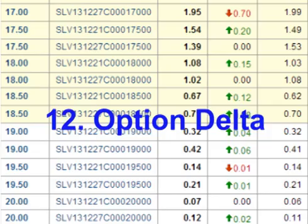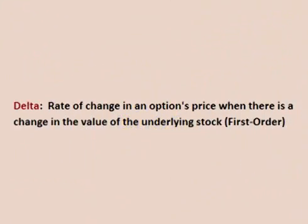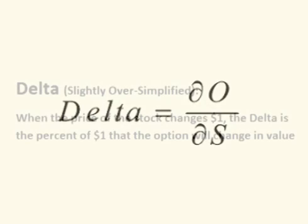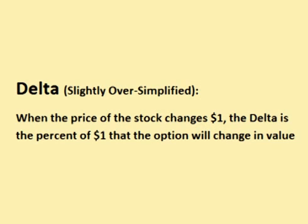Hello and welcome. In this video, we will take a closer look at Delta. In the last video, I mentioned that the Delta is the rate of change in an option's value when there is a change in the price of the underlying stock. More formally, the Delta is the rate of change in an option's value with respect to changes in the price of the underlying stock. A simple way of thinking of it is: when the price of the stock changes one dollar, the Delta is the percent of one dollar that the option will change in value.